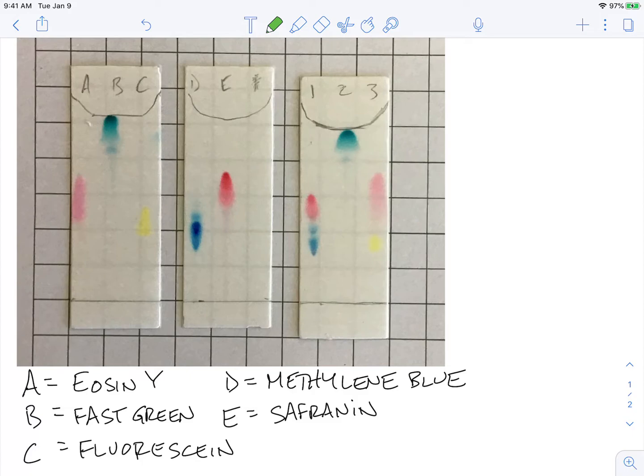So a couple reminders on the bottom of our screen here, we have the identities of the stains that were used in our lab for the known values. In the TLC plate on the right, we've got unknowns number one, two, and three.